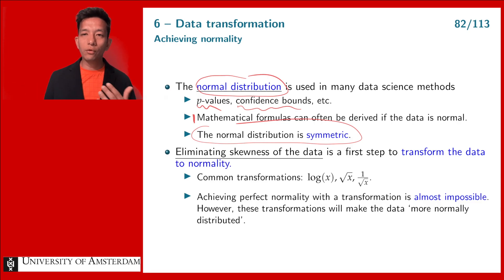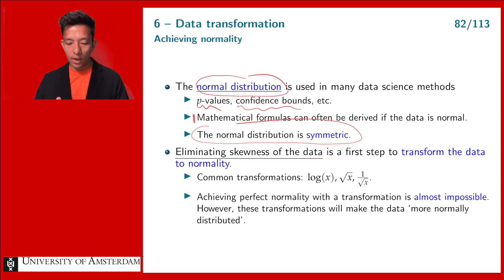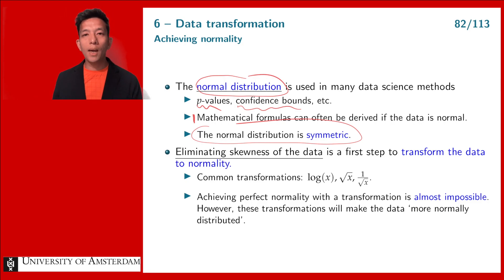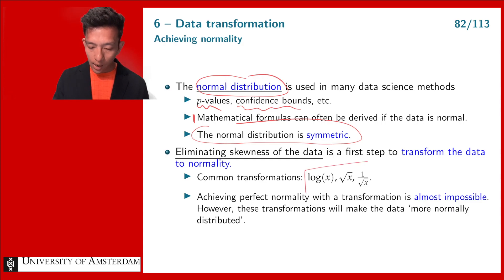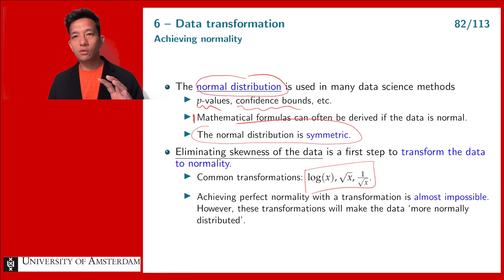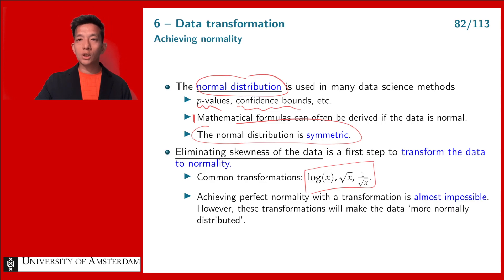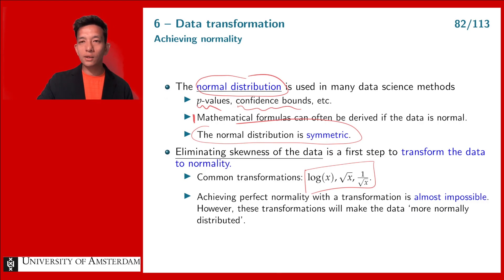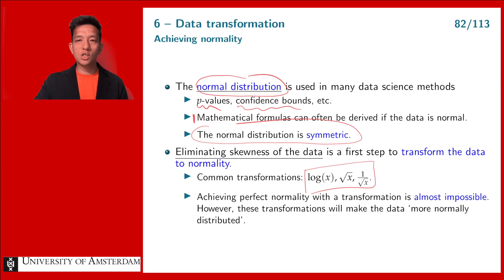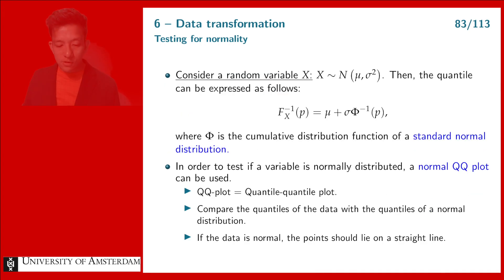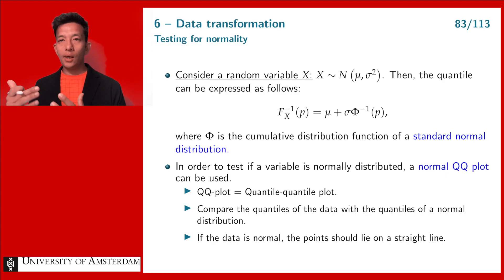If we want to use normal distributions for skewed data, we first have to apply a transformation — we cannot directly apply it on skewed data. There are three possible transformations that can turn a skewed distribution into a more symmetric one. Applying, for example, a log transformation will never give you something perfectly normally distributed, but you hope that after the transformation your data is closer to a normal distribution so that applying results from normal distribution theory is justified.